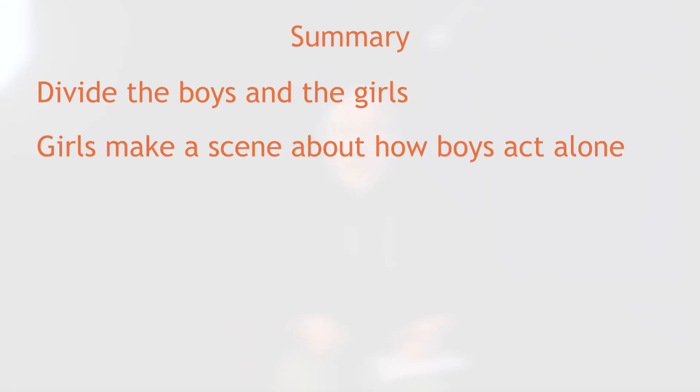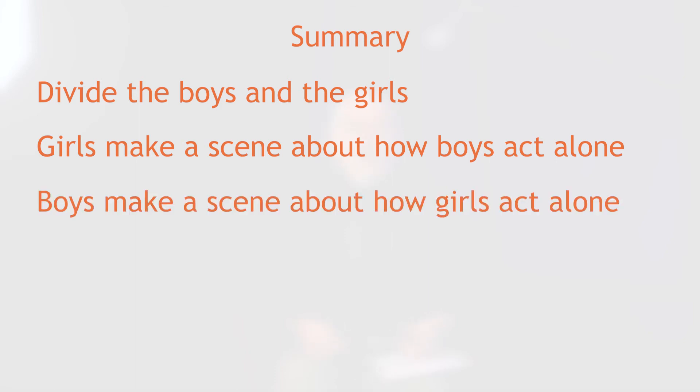To sum up: we divide the boys and the girls into two groups, one of females and one of males. We ask the females to make a scene about how they imagine males behave when there are no females around. We ask the males to make a scene about how they imagine females behave when there are no males around. Then each group performs for the other and we facilitate a discussion.